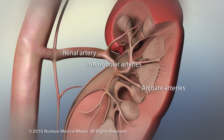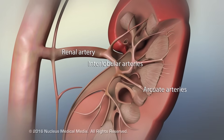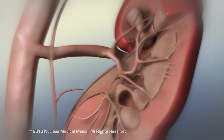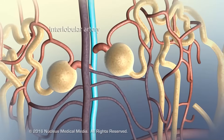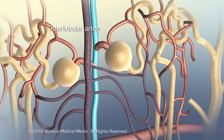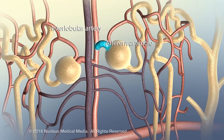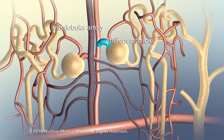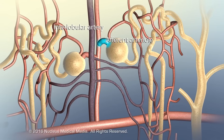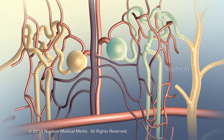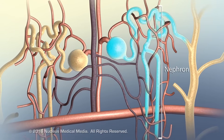Branches of the renal artery supply each renal lobe. The smallest branches of the renal artery, called afferent arterioles, supply the excretory components of the kidney, called nephrons.